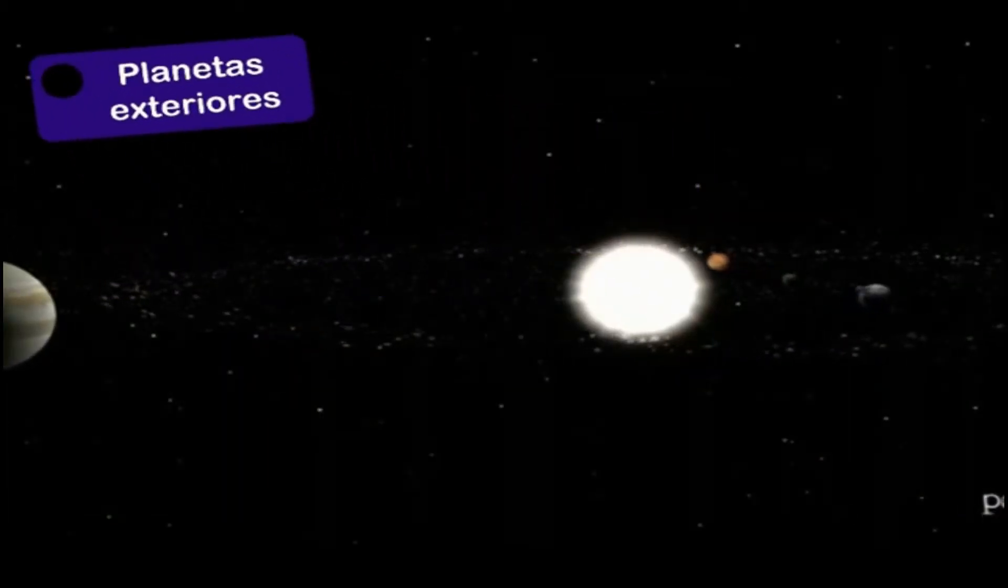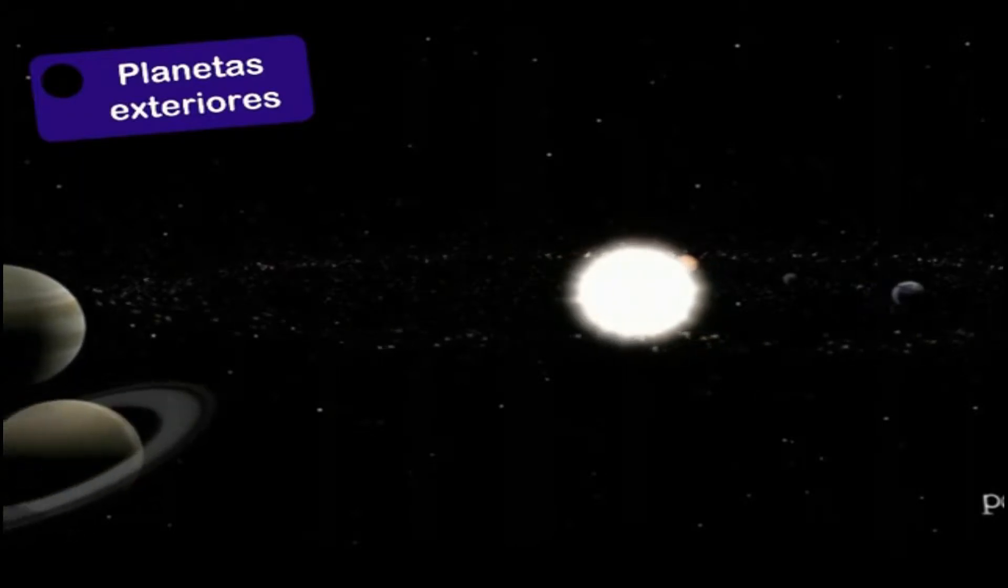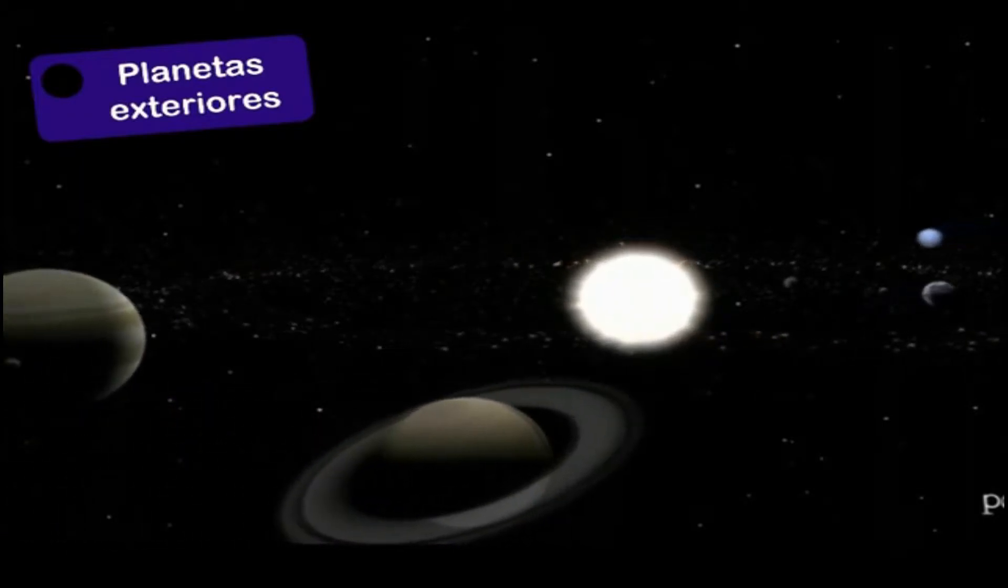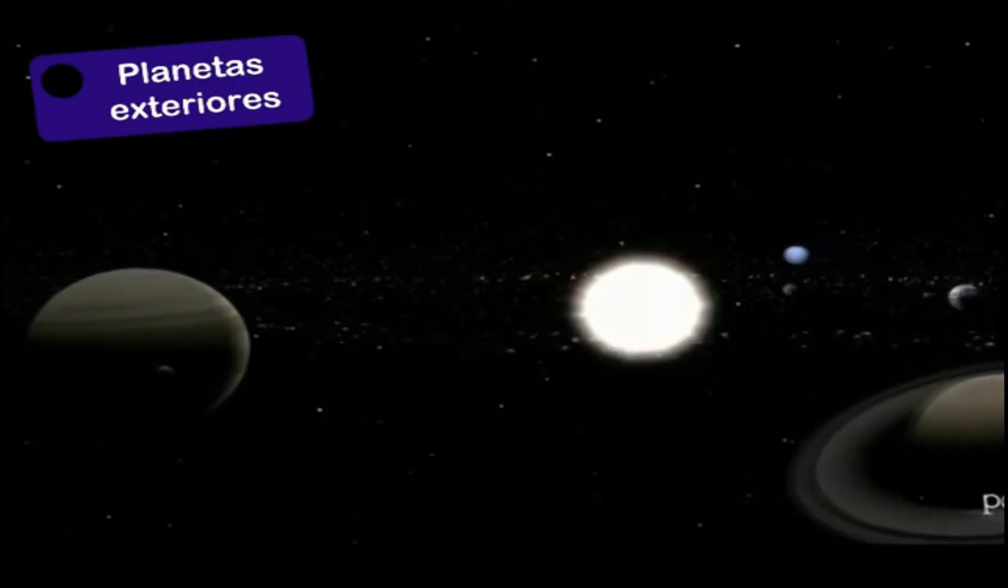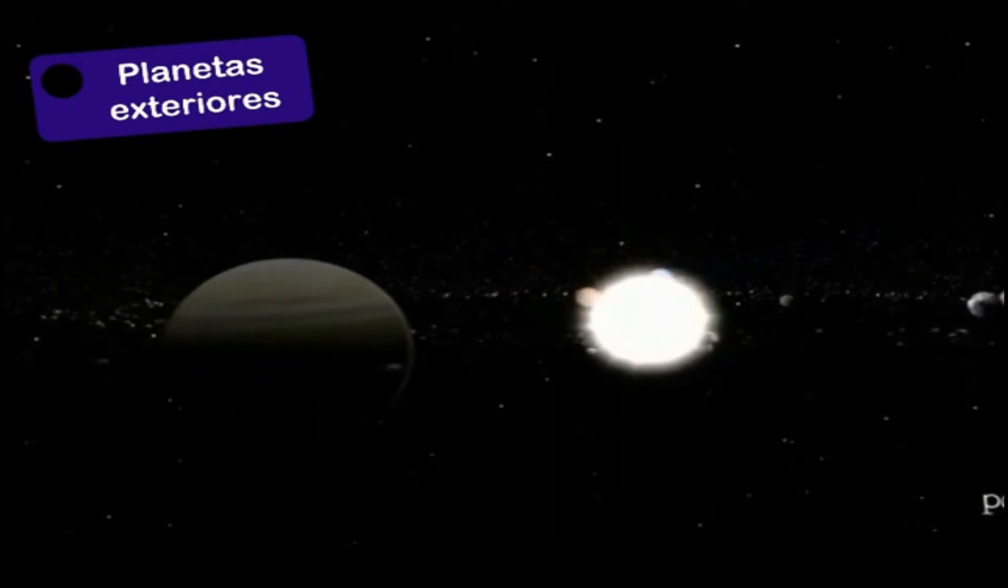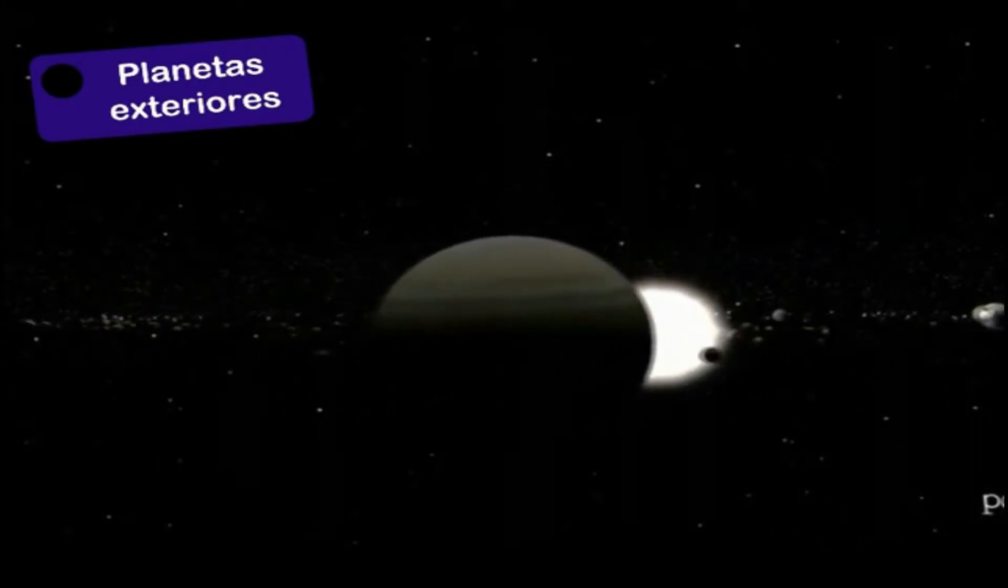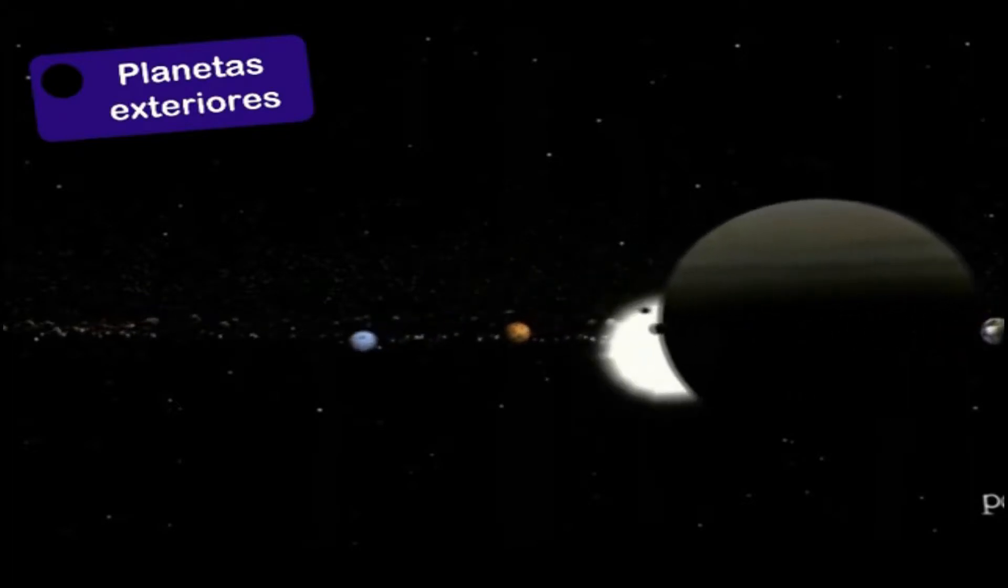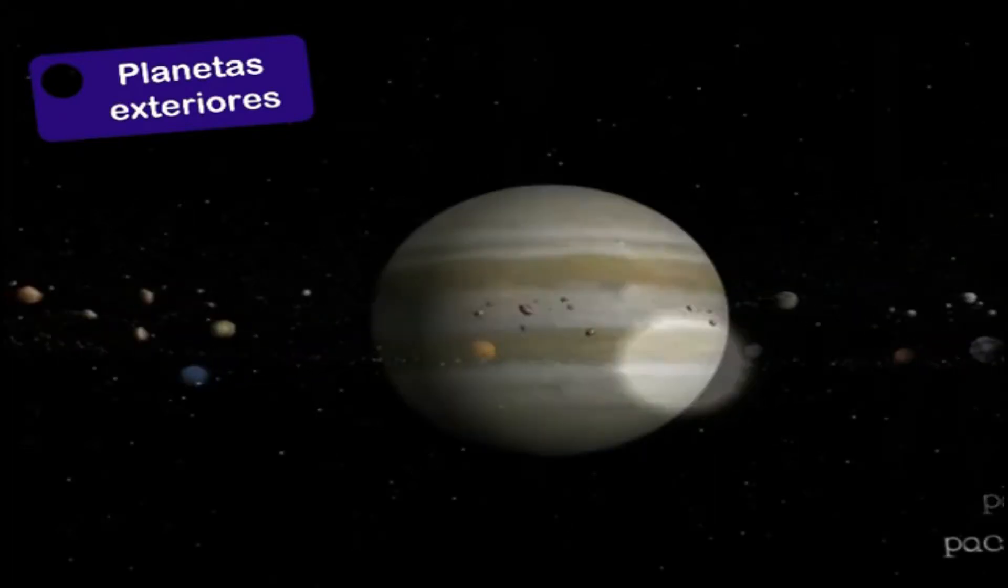Los planetas exteriores están más lejos del Sol, son mayores que los interiores y son de naturaleza gaseosa. Es decir, no tienen una superficie sólida como la de los interiores. Los planetas exteriores desde el más cercano al Sol son Júpiter...